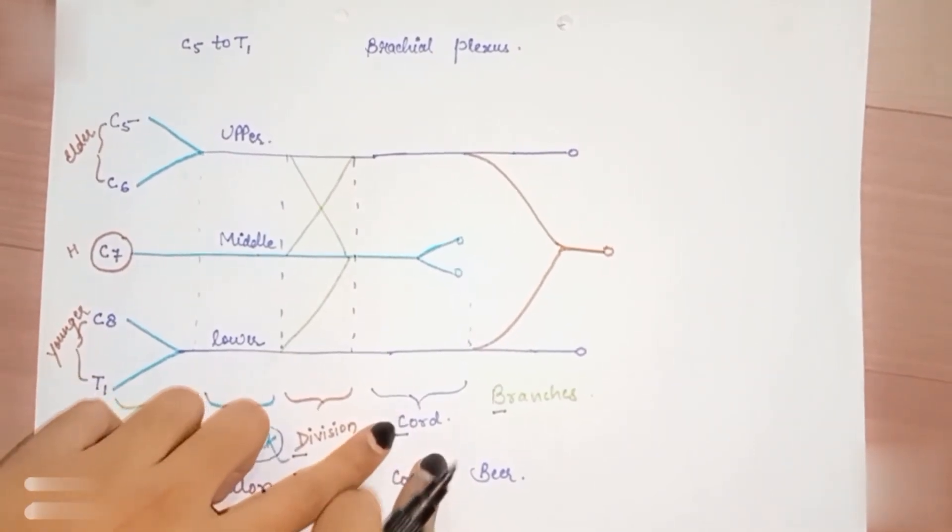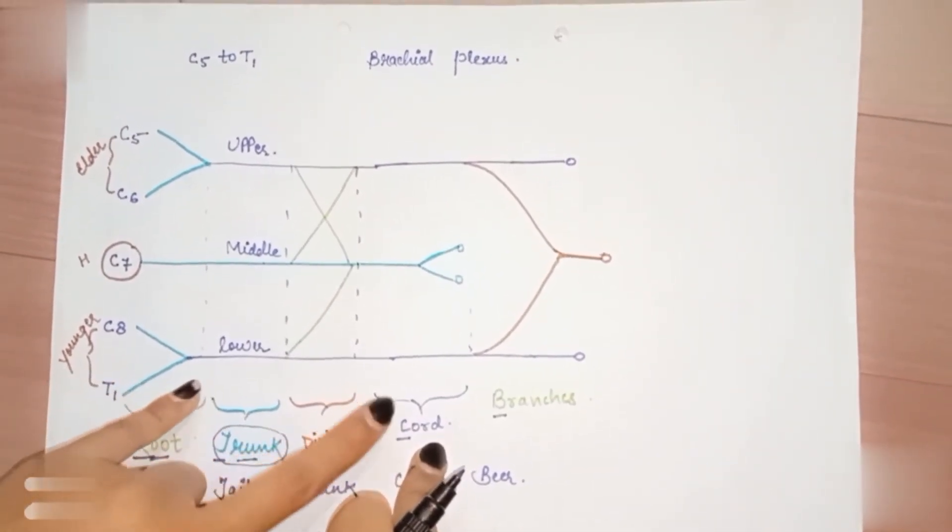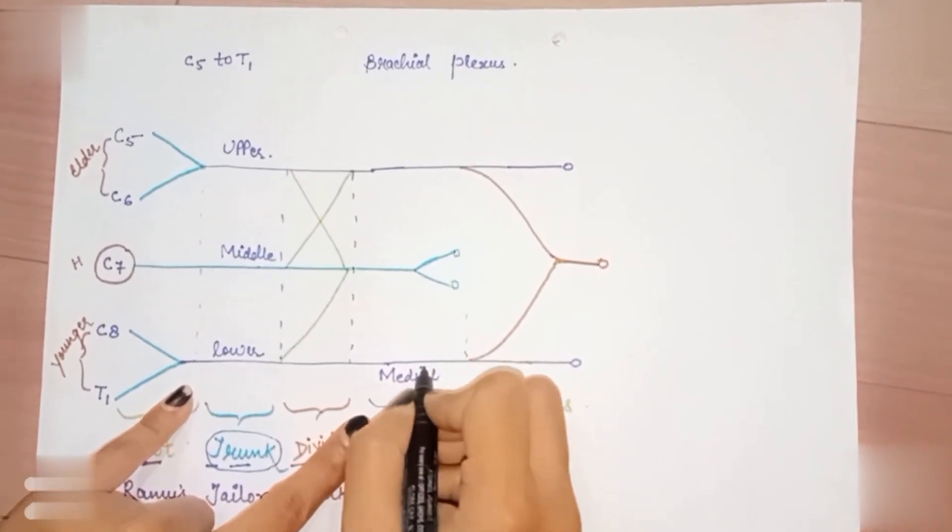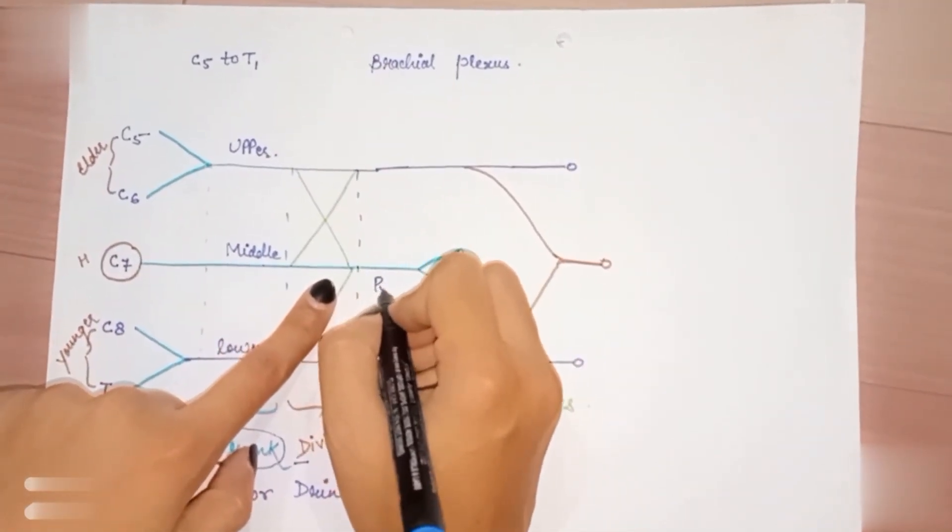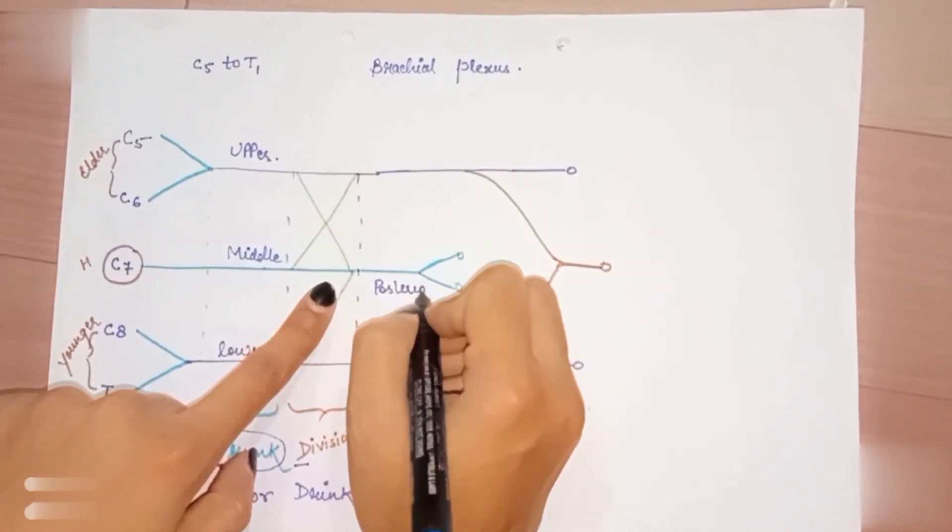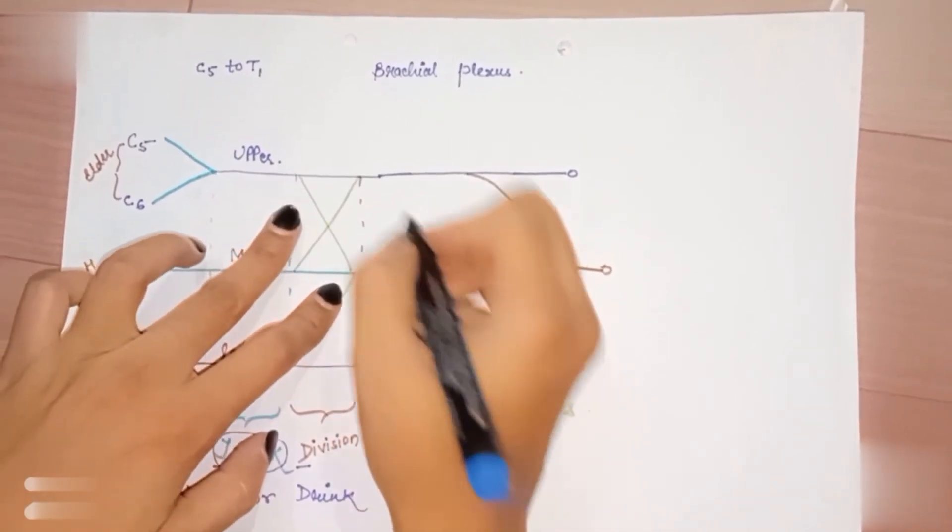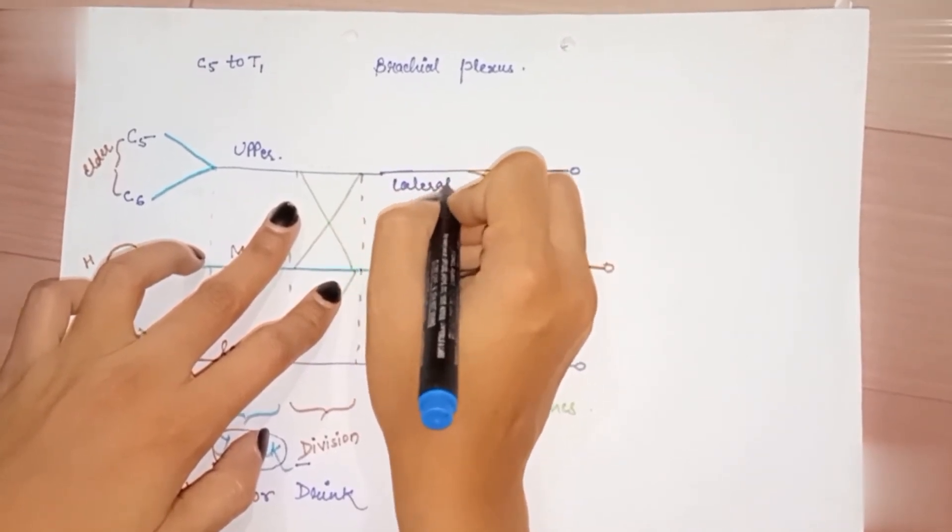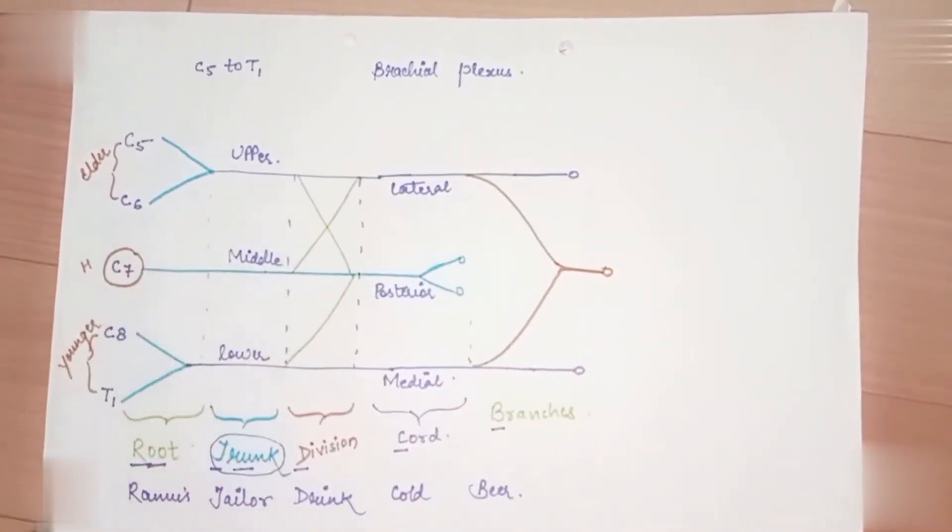Now what about the cords? C8-T1 is the medial cord which goes medially to the medial aspect of the arm. C7 is the posterior cord. Finally, C5 and C6 is the lateral cord. Done with it, this is the brachial plexus.